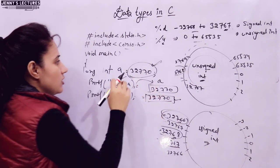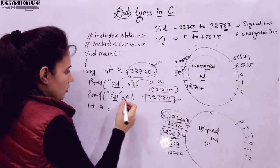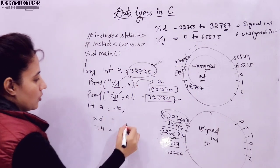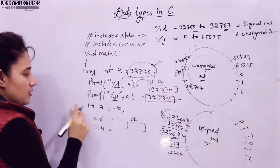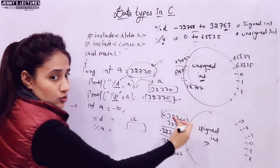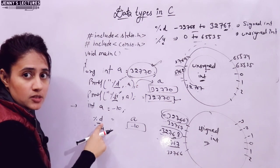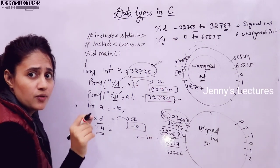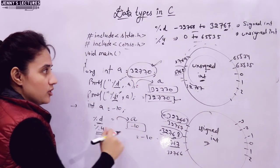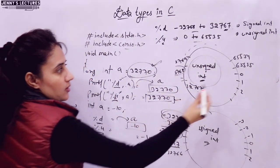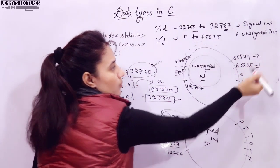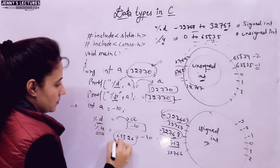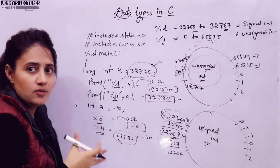Now suppose 'int a = -10' with signed integer. Minus 10 is within the signed integer range, so it is stored as -10. Printing with %d gives -10. But printing with %u (unsigned format specifier), we check the unsigned circle: going in reverse from 0, minus 1 corresponds to 65535, minus 2 to 65534, and so on. Corresponding to -10 in the unsigned circle, the value is 65526. So you initialized -10 but get 65526 — that's why you get a different answer.